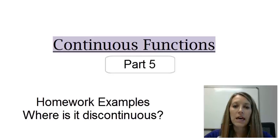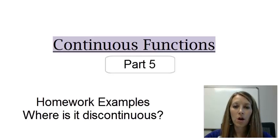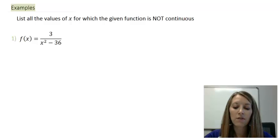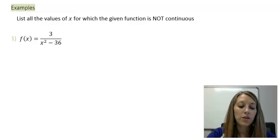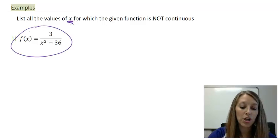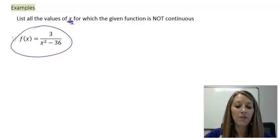Working with continuous functions. In the last two videos, we did homework examples where they gave us a specified x value and we tried to figure out whether our function was continuous or not at that specified x value. We're going to be working some more homework examples here, but they kind of switch it around. The instructions are going to say: list all values of x for which the given function is not continuous. They give us a whole function, and our job is to play devil's advocate and figure out where it is not continuous.